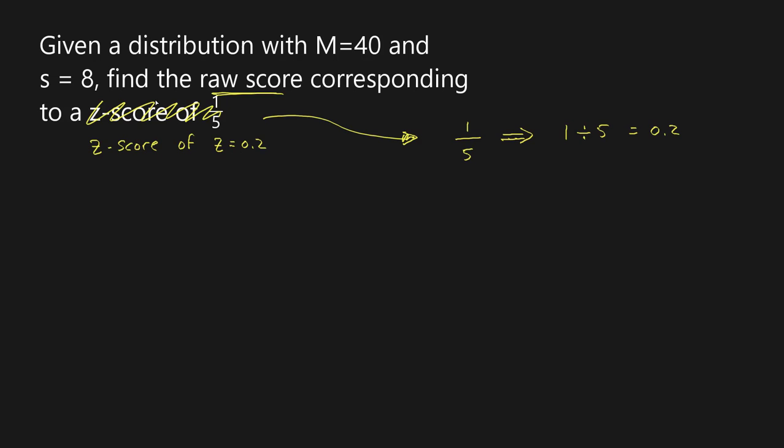So now that we've got that out of the way we can have a look at figuring out how to solve this. It says given a distribution with a sample mean of 40 and a sample standard deviation of 8, find the raw score corresponding to a z-score of 0.2.